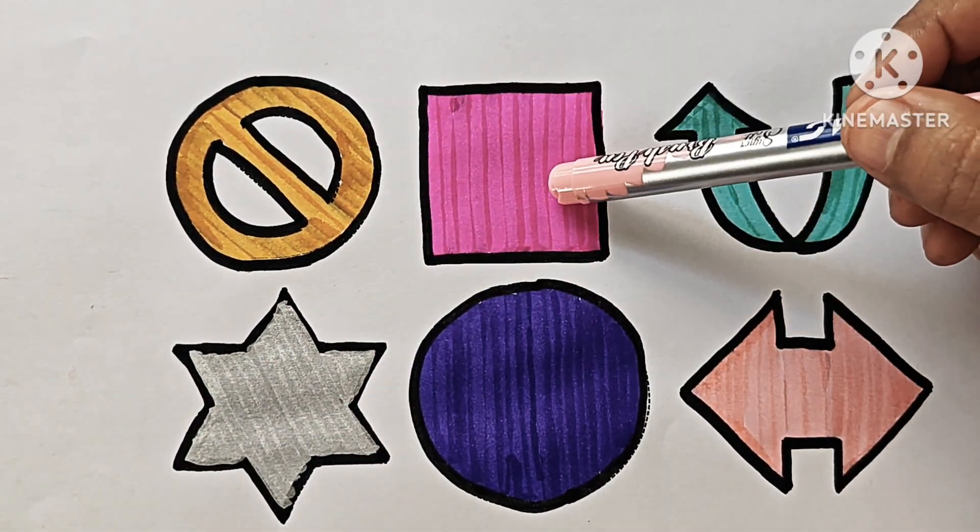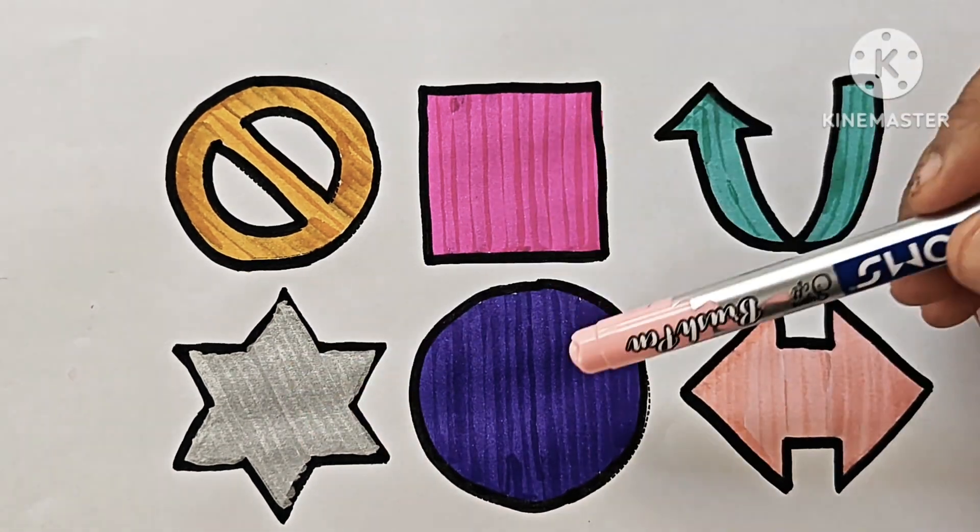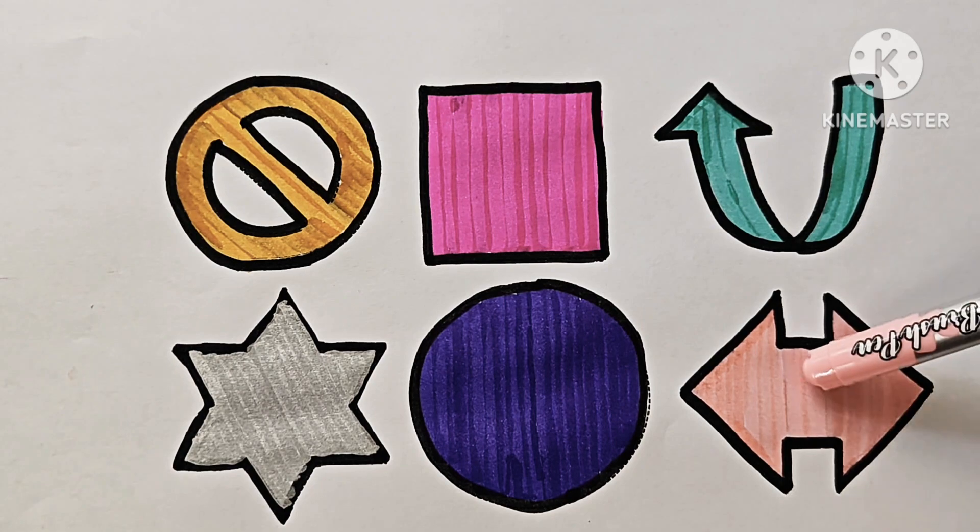Left right arrow. Not allowed symbol, square, curved up arrow, six pointed star, circle, left right arrow.